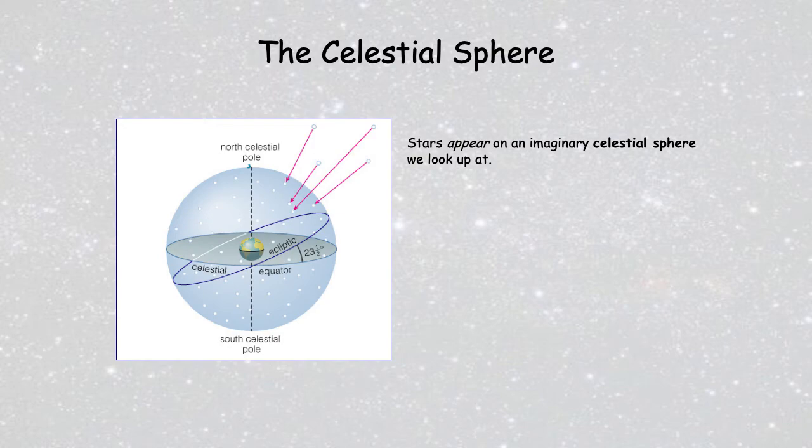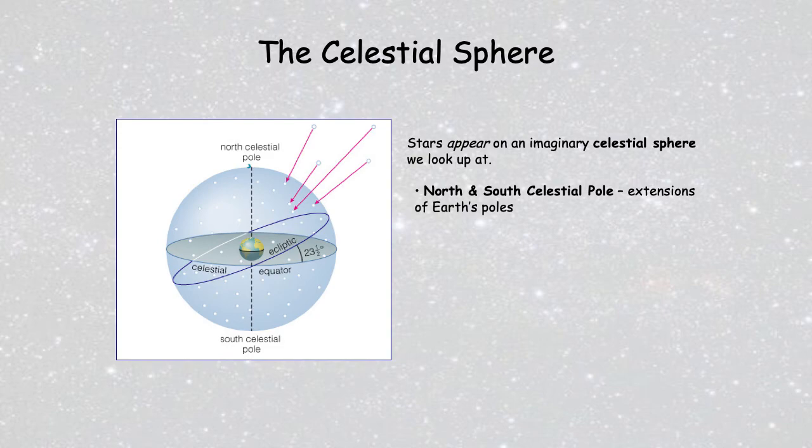I want to start with something called the celestial sphere. You'll see here that we have an image showing our Earth inside of this enormous, although fictitious, celestial sphere. Even though it's imaginary, it is a very useful device for understanding the sky. Notice how we could take the Earth's north and south poles and extend them up into space to where they would intersect this celestial sphere — those two points would be the north and south celestial poles. We can do something similar with the Earth's equator, extending it out into space, and where it intersects the celestial sphere, we call that the celestial equator.